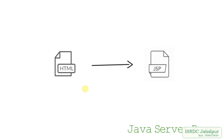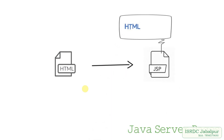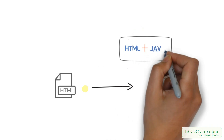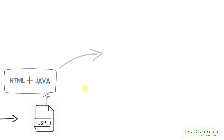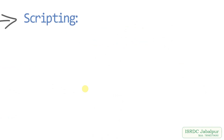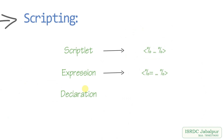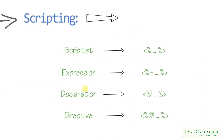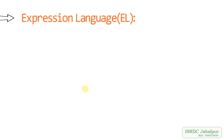JSP allows creating dynamic pages using Java along with HTML. JSP provides various techniques to create dynamic pages. So far we learned scripting, where we talked about scriptlet, expression, declaration, and directives. Then we learnt Expression Language, which is a simpler and more powerful approach than scripting.